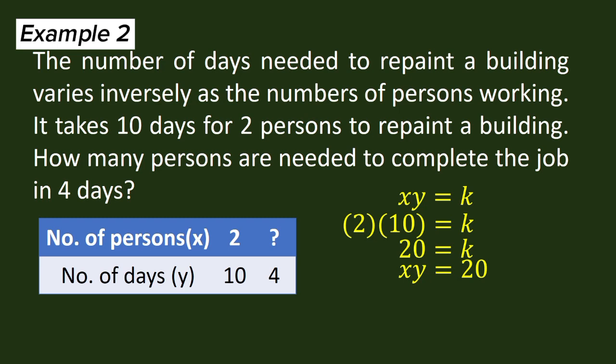Now X is unknown when Y is equal to 4. We are going to solve for X using this new formula, and we substitute this Y. So we have XY is equal to 20. X times 4 is equal to 20. Divide both sides by 4. We have X is equal to 5.